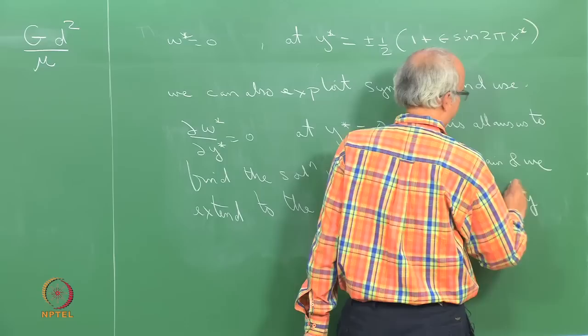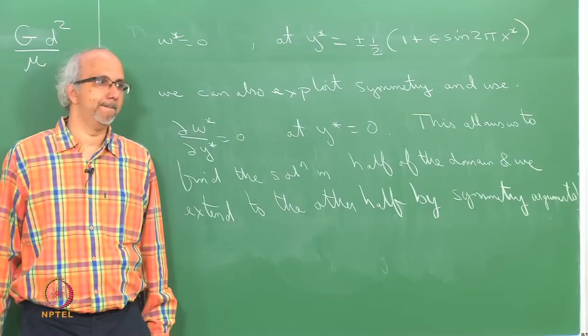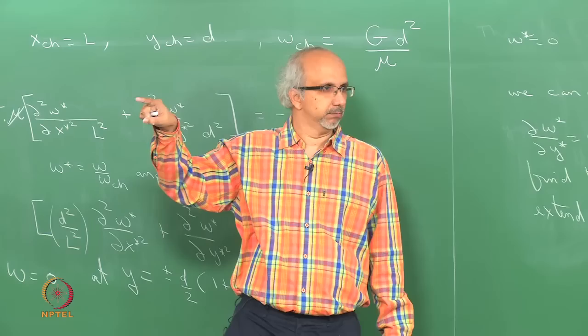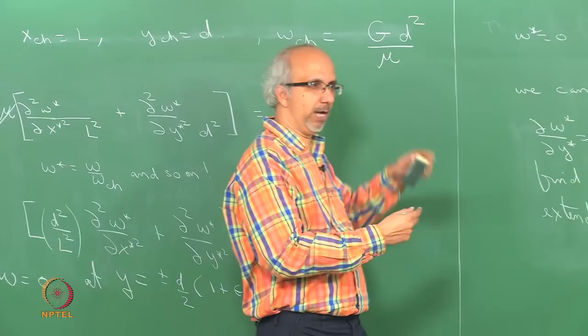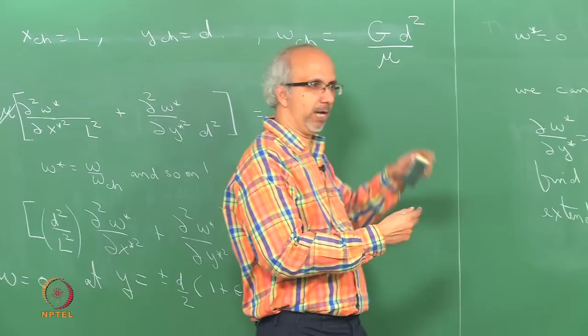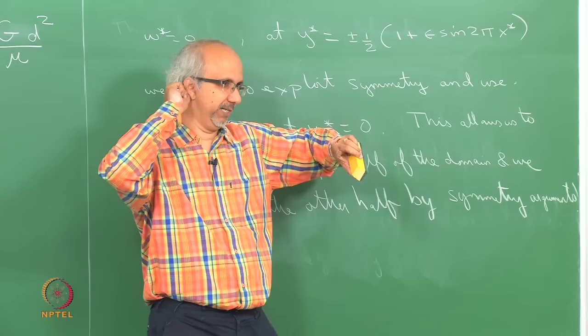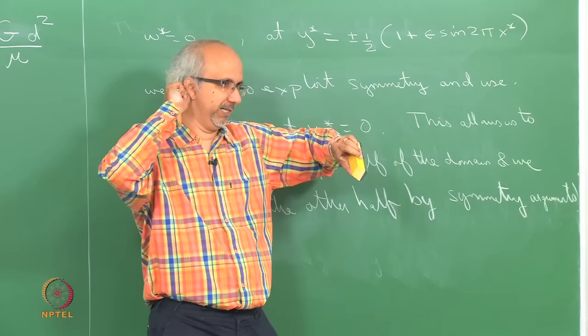The reason y* = 0 is the center line throughout x is that the periodicity in the top and bottom walls are in phase. At every point, y* = 0 is the center of the channel — the two crests coincide and the two troughs coincide. If they were out of phase, we might not be able to use this symmetry.